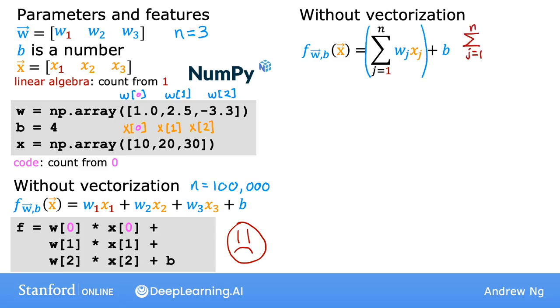So the summation goes from j equals one up to and including n. For n equals three, j therefore goes from 1, 2 to 3.